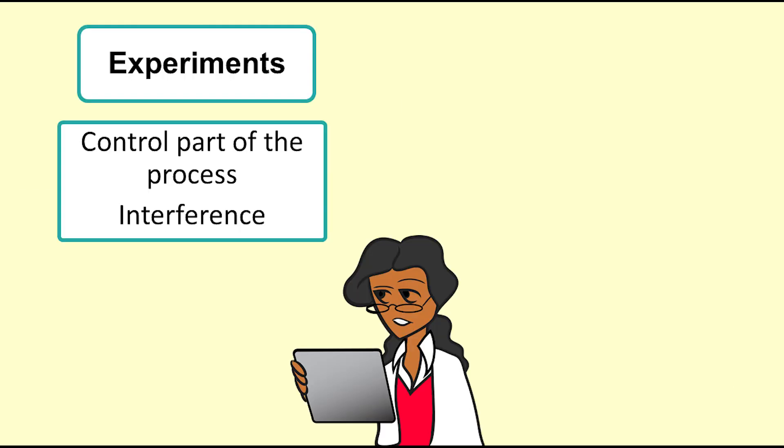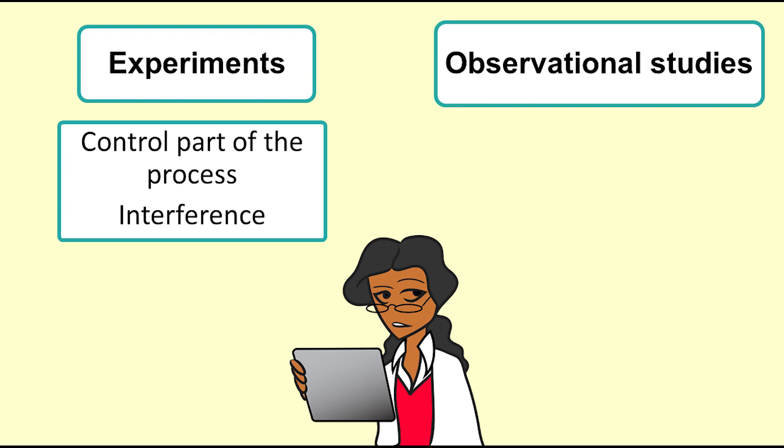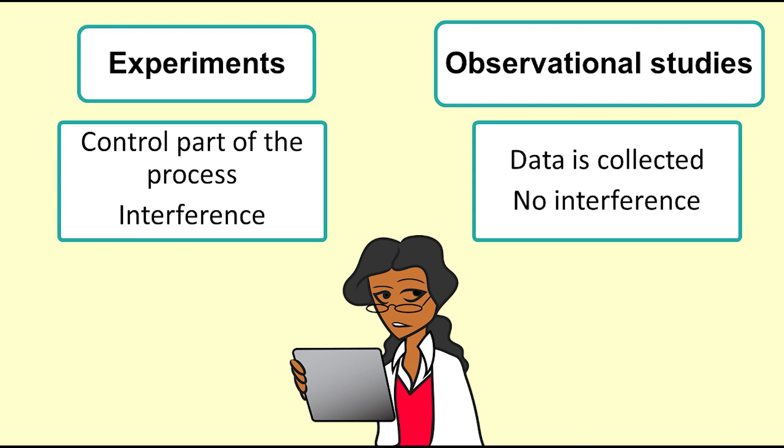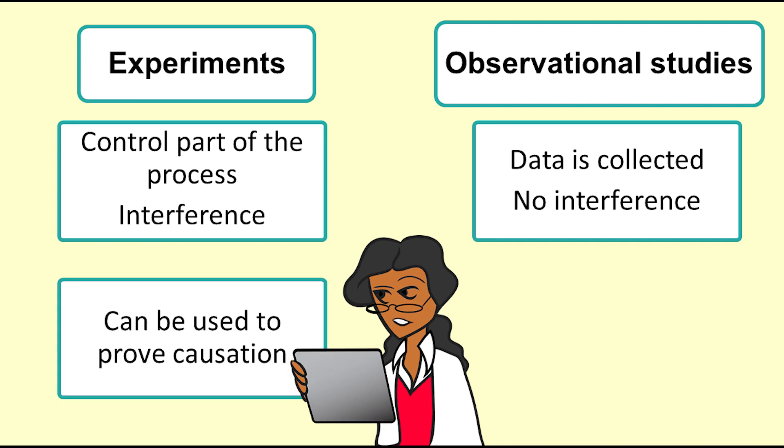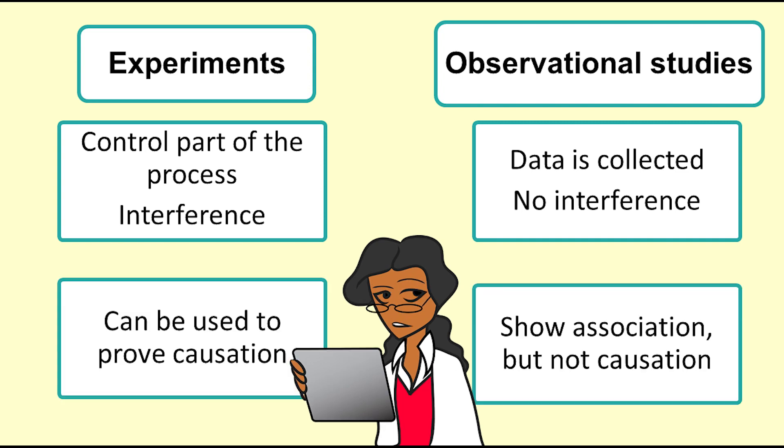In an experiment we control certain aspects of a process so that we can find out what the effects are. This is known as intervention or interference. Experiments are different from observational studies. In observational studies we collect data or use data that has already been collected. We do not change or interfere with the process being studied. If we want to show that something causes something else, we generally need to run an experiment.